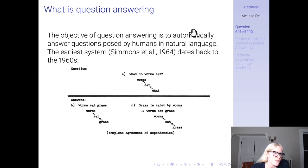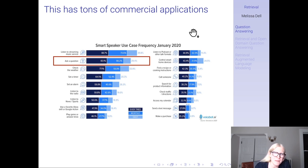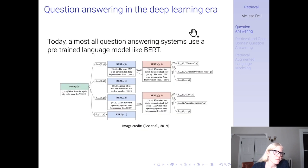Question answering is something that there's been interest in for a long time. The earliest computer system to answer questions dates all the way back to the 1960s. Obviously, question answering has enormous commercial applications — people ask their smart speakers questions, they ask Siri questions, they ask chat questions, et cetera. Today, almost all question answering systems use a pre-trained language model like BERT.